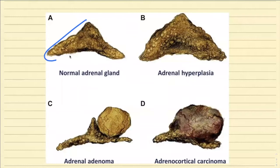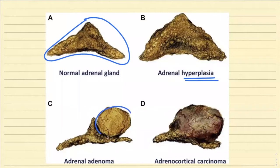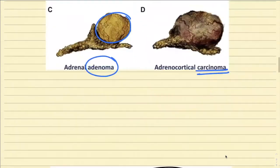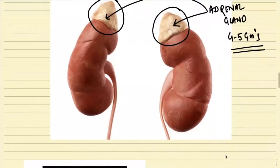On the outer aspect there is a capsule and suprarenal fat. The normal adrenal gland looks like this. There are different conditions which can affect the adrenal glands — for example, hyperplasia, a well-defined adenoma, or involvement by carcinoma. We are going to understand the different kinds of conditions and basic disorders today.